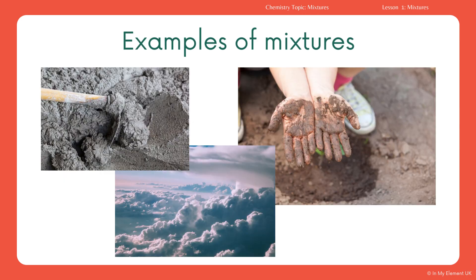Some examples of mixtures: we've got cement, we've got mud, and the fluffy little clouds are showing us air as a mixture. Air contains oxygen, nitrogen, carbon dioxide, and a few other gases. Those are some examples and they can be separated. Remember that mud is a mixture of dirt and water. Cement is a mixture of sand, water, and usually some gravel as well.